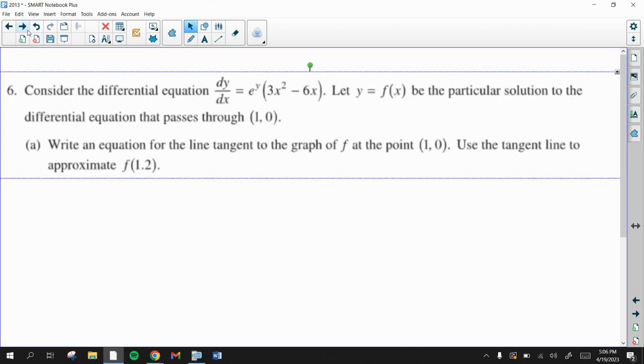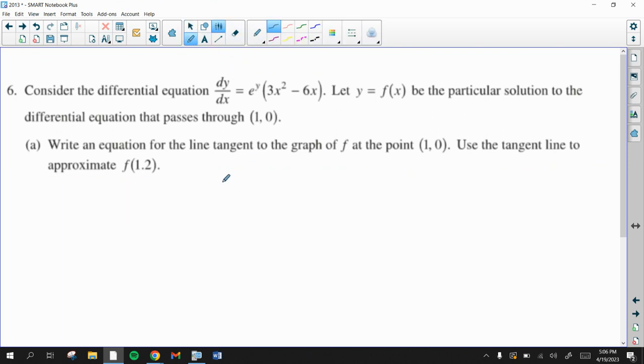It says y equals f of x is the particular solution that passes through (1, 0), and it wants us to find the equation of the tangent line to f without knowing what f is. So just write down the equation of any tangent line to any graph f at (1, 0). It would be y minus f(1) equals f prime of 1 times (x minus 1).